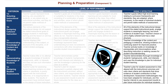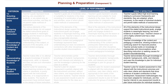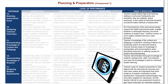Placemat tasks that support differentiation can help teachers show evidence of thorough knowledge of students' background, skills, and interests, and uses this knowledge to plan for individual student learning. Through the use of rubrics on the placemat, teachers can provide evidence that they plan for student assessment that is fully aligned with the instructional outcomes and uses clear criteria and standards that show evidence of student contribution to their development.